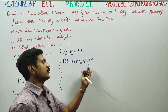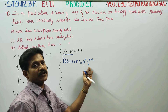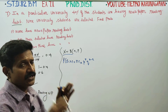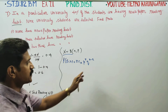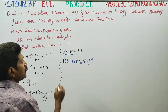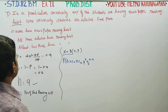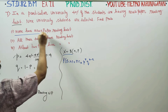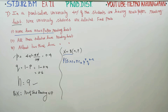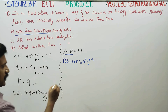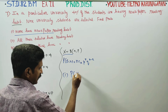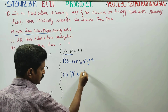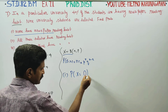In this formula, success is the case where a student reads the newspaper, and failure is the case where they do not. First question: find the probability that none of the selected students have newspaper reading habits.